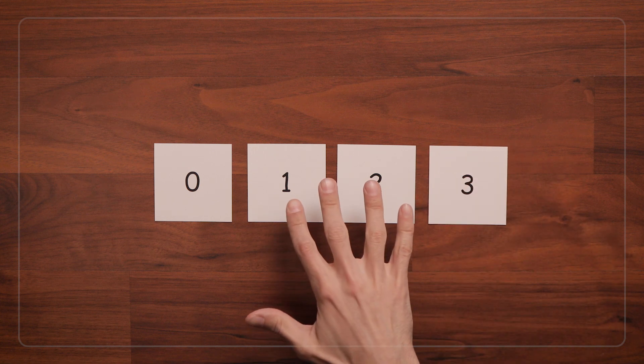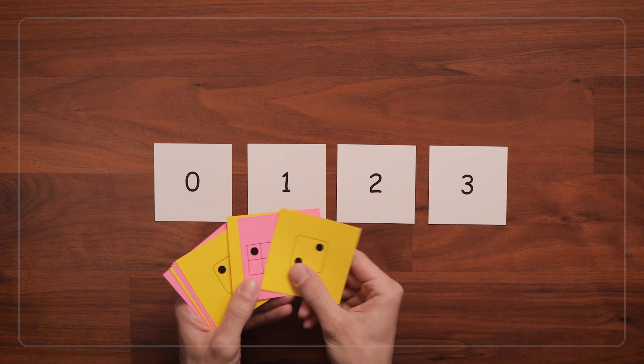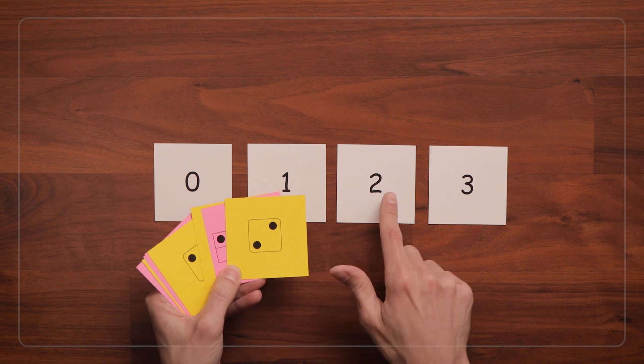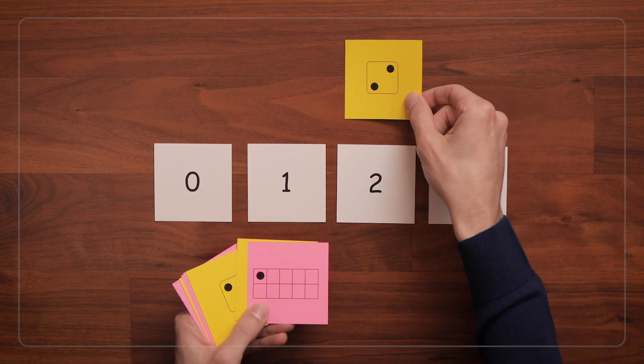Then you can say, hmm, these numbers are hungry, but they only eat cards that have the same number of dots as their numeral. So we're going to feed the matching dot cards to the numeral cards.